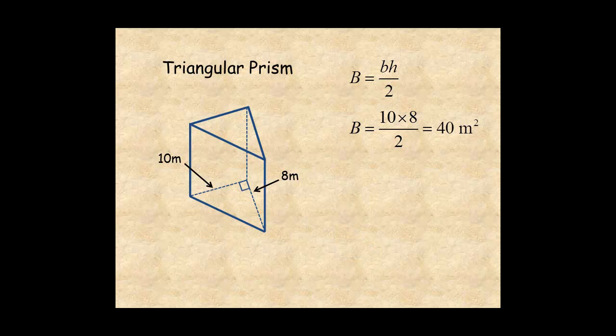Then the volume of the prism is the area of the base times the height of the prism, which is 13 meters. So the volume is 40 times 13, or 520 cubic meters.